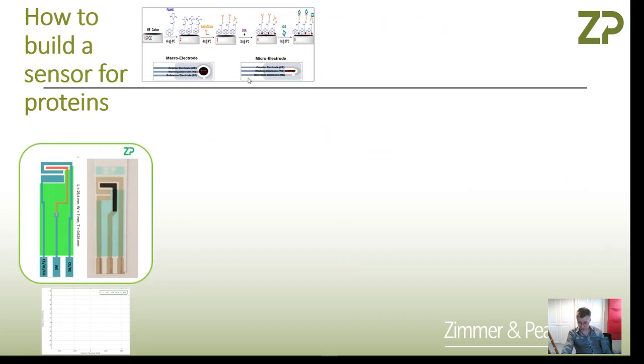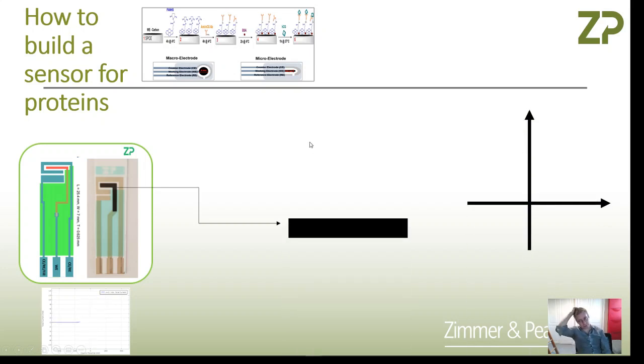What we did was this: we took the screen printed electrodes, and first of all, we did a technique called cyclic voltammetry just to characterize the electrode. If you're not sure about what cyclic voltammetry is, I think we're going to put a link. If you're watching this on YouTube, I'll put a link below the video to another video where we introduce methods for electrochemistry.